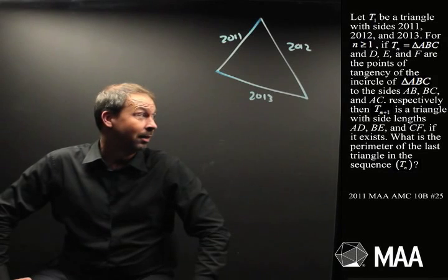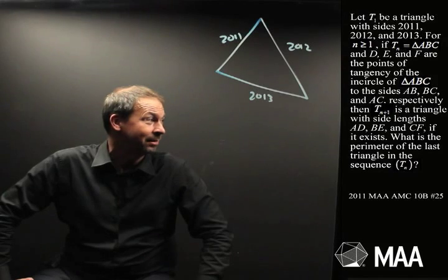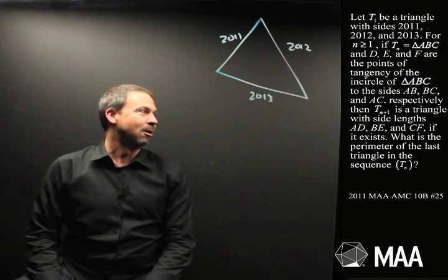I'm getting lost. Then Tn plus 1 is the triangle with sides of lengths AD, BE, and CF, if it exists. Oh heavens, that was a long, long sentence.